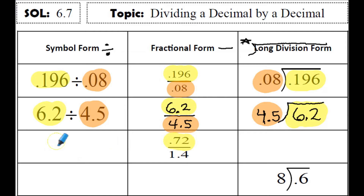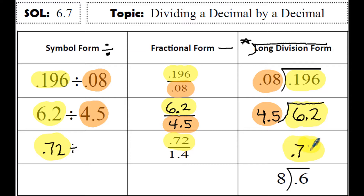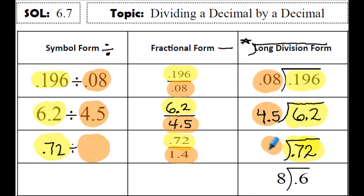For this next example, 72 hundredths is in the numerator, so that's the first number in the symbol form, and it's the number that goes inside the long division form. The second number, or denominator, is 1 and 4 tenths, so the second number stays second, and 1 and 4 tenths is on the outside of the long division form.